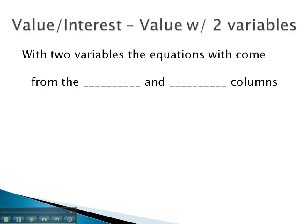With two variables, we will find our equation not just from the last column, but also we'll get a second equation from the first column. This will give us two equations with two variables so that we can solve the problem.